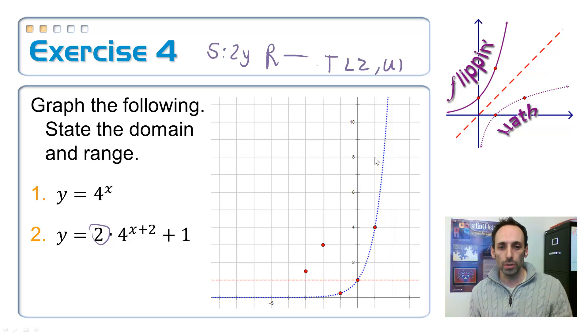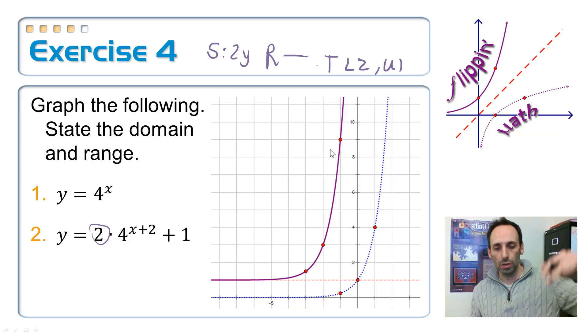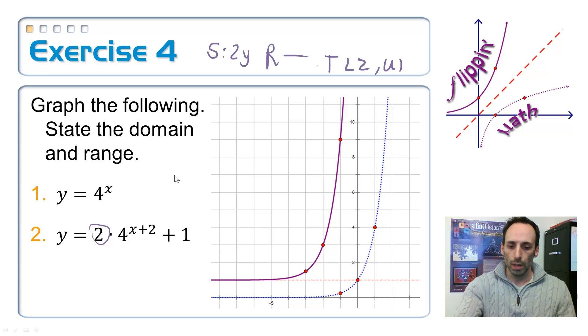Okay. Finally, it's the one that's at 4. Multiply it by 2. It's going to be at 8. Move it 1, 2 to the left, and up 1. It is right there. And then draw your graph, making sure that you hug that asymptote. Okay. Finally, what's the domain and the range?